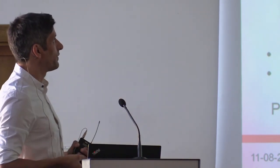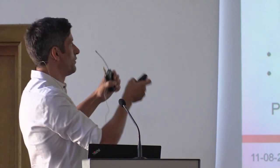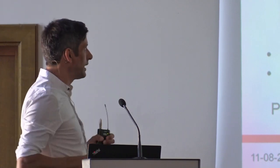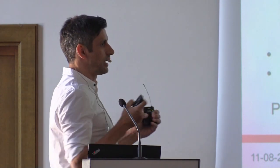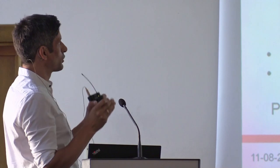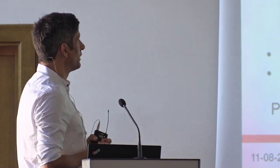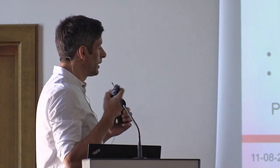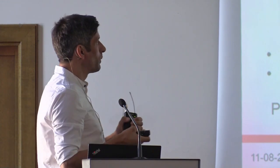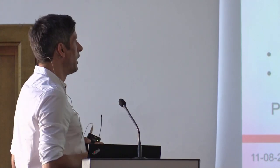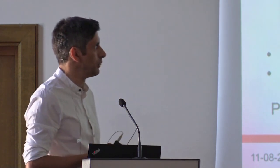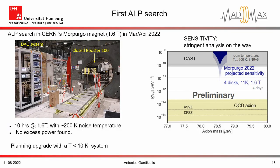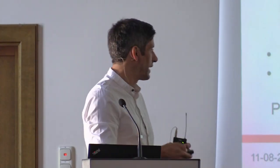We also had the chance to run the first ALP search at CERN. The DAC system was transferred from our labs to the experimental hall at CERN. We performed first measurements checking that electromagnetic noise is not affecting our system, then ran the closed booster CB100 inside the Morpugo magnet. Unfortunately, due to some installation of the power converter of the magnet, we only had 10 hours of data taking at 1.6 Tesla with the same noise temperature, and no excess power was found. We were able to produce the first preliminary result close to the CAST limit. The projected sensitivity with much lower temperature — which we hope to achieve next year — even with four discs at the same magnetic field, will surpass the CAST limit in this frequency range for axions.